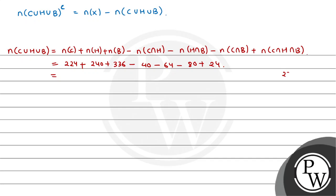Adding the individual sets: 224 + 240 + 336 = 800. Now subtracting the intersections: 40 + 80 = 120, plus 64 = 184. Then adding back n(C∩H∩B): 184 minus 24 gives us 160. So n(C∪H∪B) = 800 minus 160 = 640.